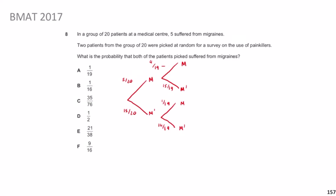The probability that both patients have migraines is P(M and M) = (5/20) × (4/19) = 20/380 = 1/19. The answer is A.